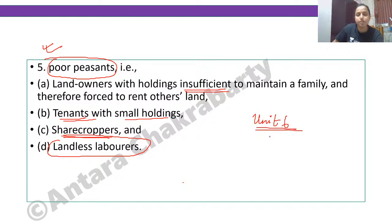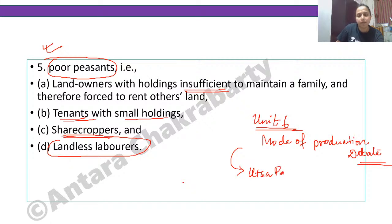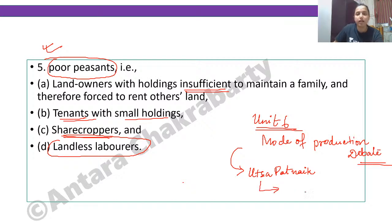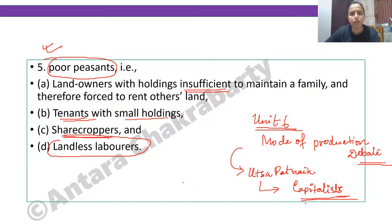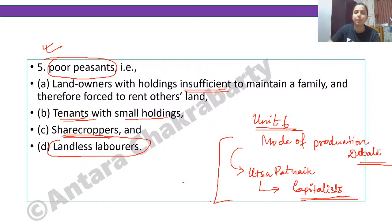In Unit 6 there is another topic — the mode of production debate — which is a separate, lengthy topic. Utsa Patnaik gave many classifications such as capitalist and pre-capitalist, and argued that capitalist farmers were first seen in India. There are also many others like Ashok Rudra and Hamza Alavi. We won't go into this today as it belongs to Unit 6 under capitalist farming.